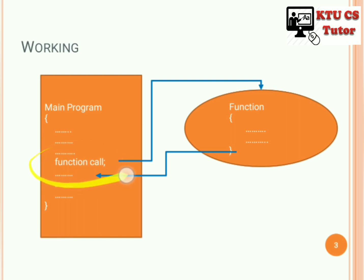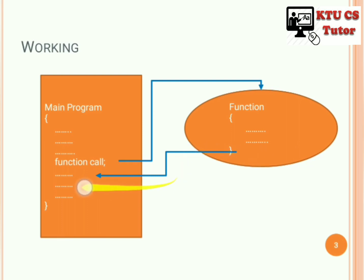When the function call occurs, the compiler starts executing the sequence of steps inside the function. After executing all the statements inside the function, it comes back to the next statement after the function call, and executes the remaining statements inside the main program. This is the working of a function.